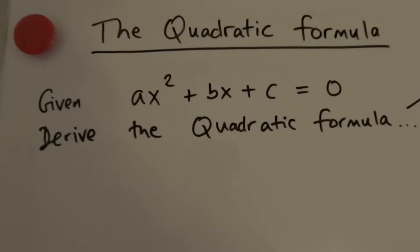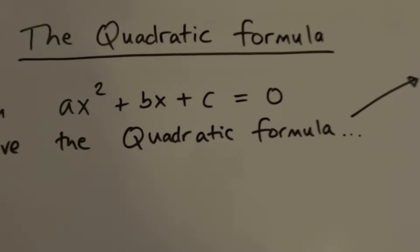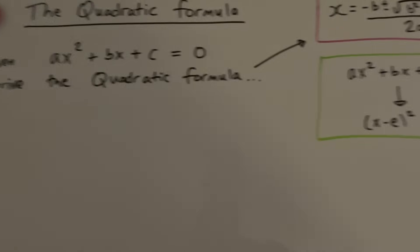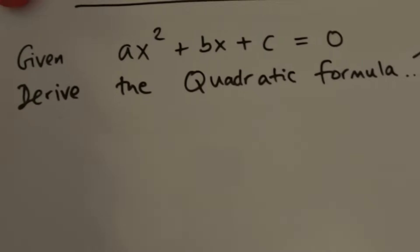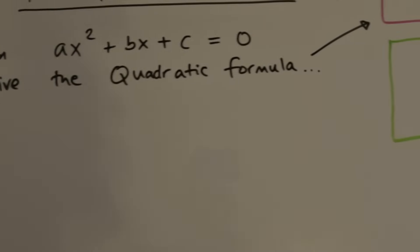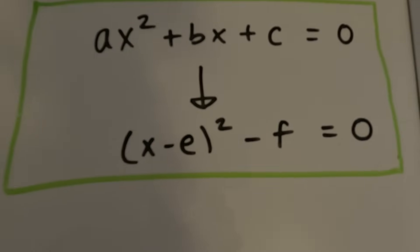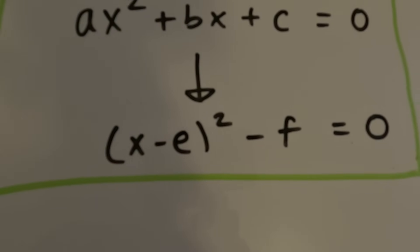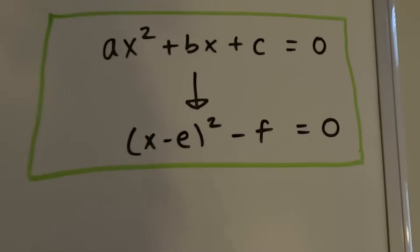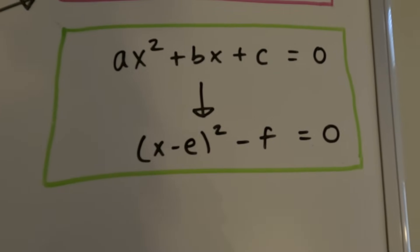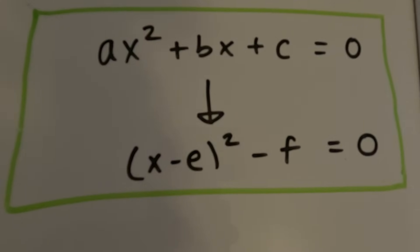So if a question says 'given ax² + bx + c = 0, derive the quadratic formula,' you should immediately be thinking: completing the square. If you learn this form — (x − e)² − f = 0 — which is not very difficult to memorize, and you understand it, then you're onto a winner and it'll be very easy to answer these questions.